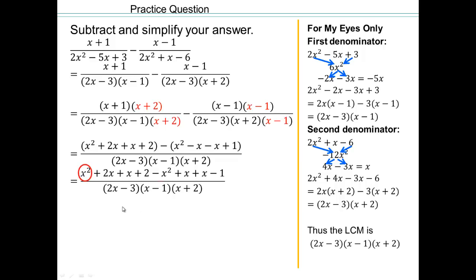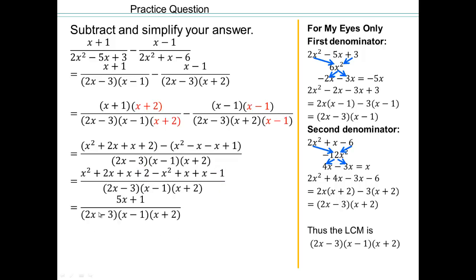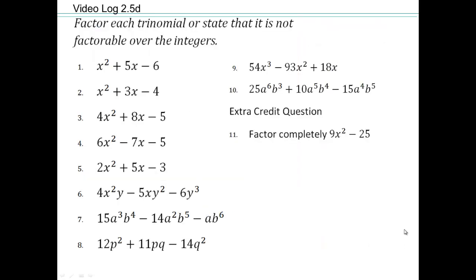So we have x squared plus 2x plus x plus 2, and then the negative sign distributes — remember the imaginary 1 there. Negative 1 times x squared is negative x squared; negative 1 times negative x is positive x; negative 1 times negative x is positive x; negative 1 times positive 1 is negative 1. Now add like terms: x squared minus x squared is gone. 2x plus x is 3x, plus another x and x gives 5x. And 2 minus 1 is 1. So the result is 5x plus 1. Try these on your own.